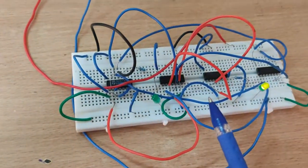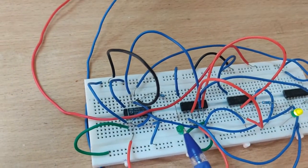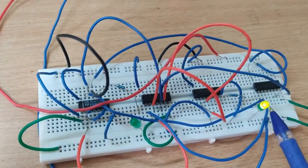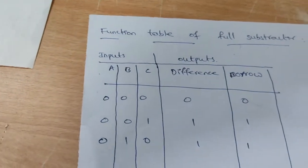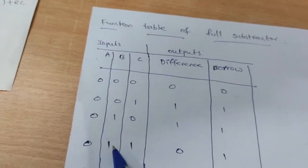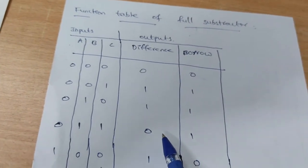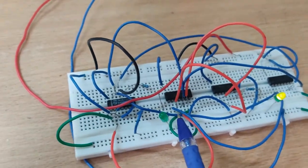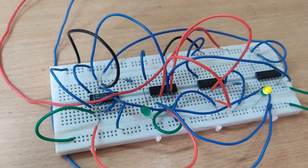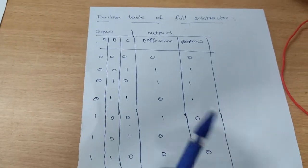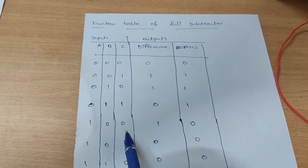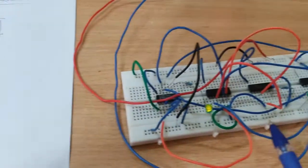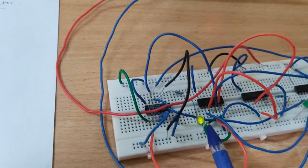For combination A=0, B=1, C=1: the first LED (difference) is off, that is 0, and the second LED (borrow) is on, that is 1. So outputs are 0 and 1. For the next combination, inputs are A=1, B=0, C=0: the difference is 1 and the borrow is 0. The difference LED is on and the borrow LED is off.